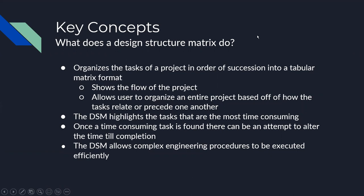What does a Design Structure Matrix do? A Design Structure Matrix organizes the tasks of a project in order of succession into a tabular matrix format. It shows the flow of the project and allows the user to organize an entire project based off of how the tasks relate or precede one another. The DSM highlights the most time-consuming tasks, and once found, there can be an attempt to alter the time till completion. It allows complex engineering procedures to be executed efficiently that otherwise would take much longer time and much more planning.